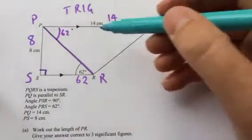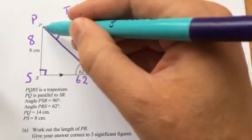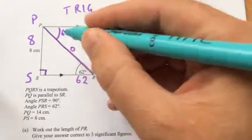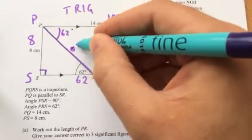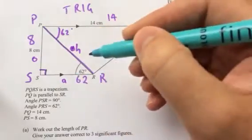First thing we're going to have to do is work out the length of PR. So I know it's one right angled triangle that I'm dealing with here. If I label that, that's going to be the opposite. Sorry, that's the hypotenuse. That's the opposite to 62. And I know that's the adjacent.